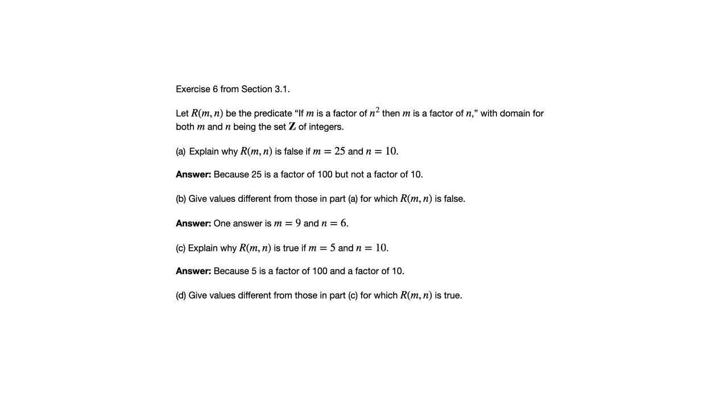If the hypothesis is false, then the conditional statement is automatically true. In other words, if the if part is false, then the conditional statement is true automatically. So one answer is M equals 3 and N equals 4. In that case, 3 is neither a factor of 16 nor 4, but the conditional statement is true. Going back to how the truth table works for conditional statements.